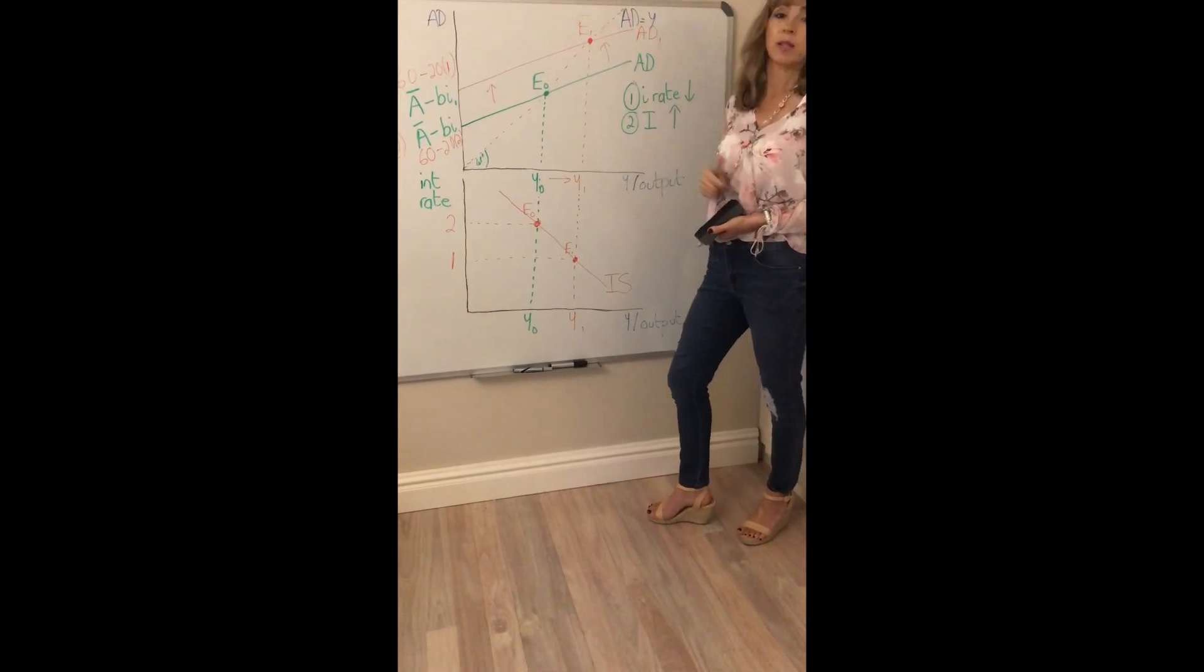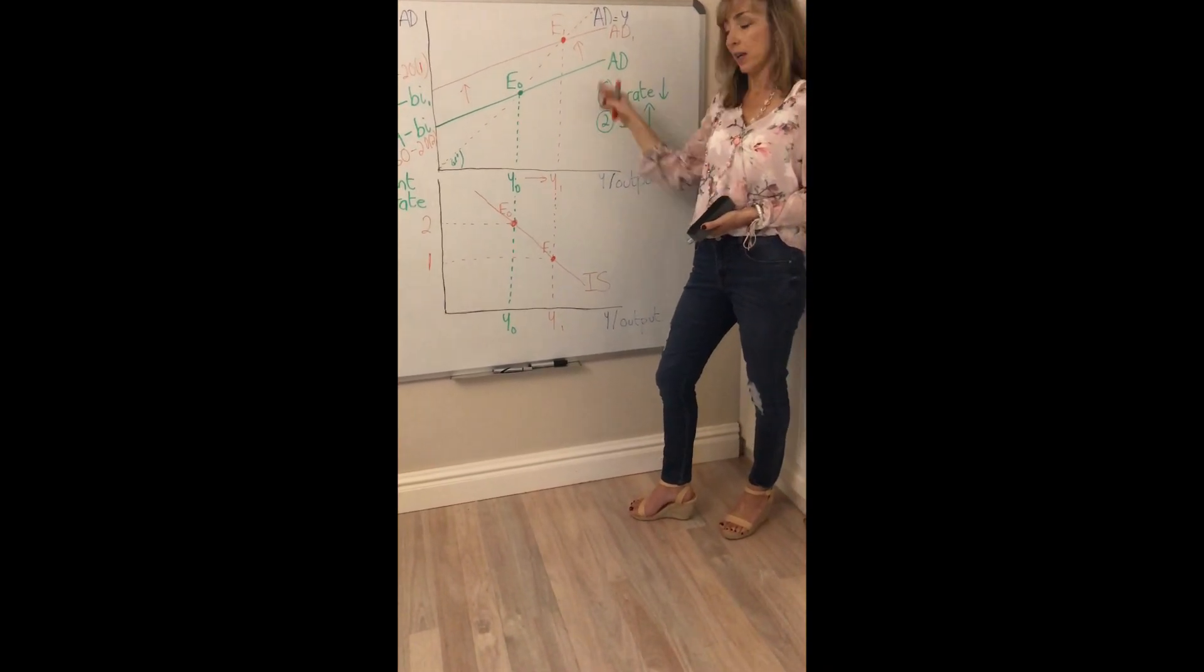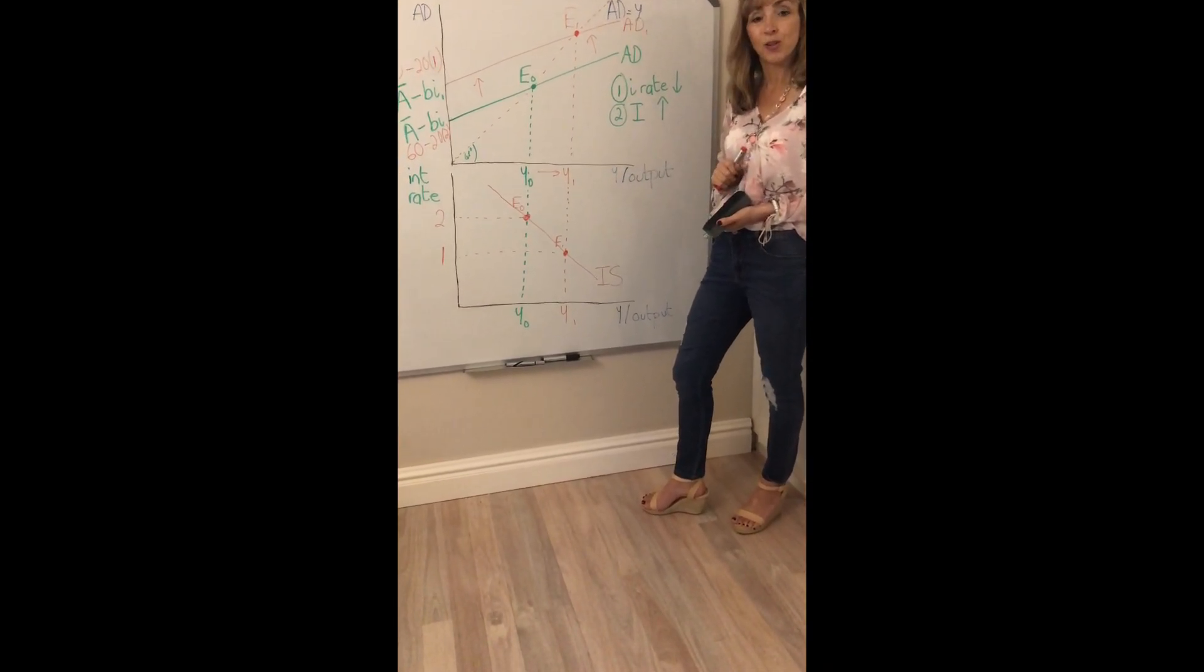Interest rate falls, investment rises and AD shifts. And that'll help you to remember how to derive the IS.